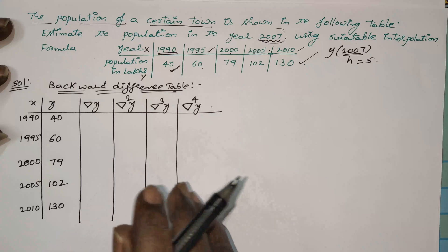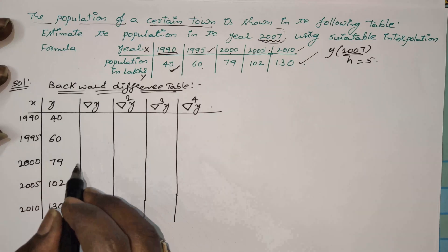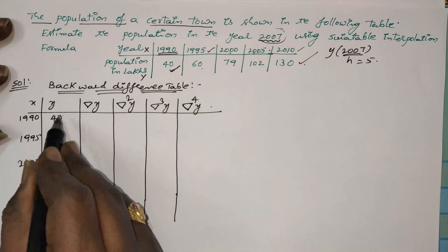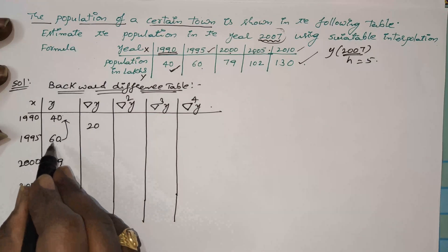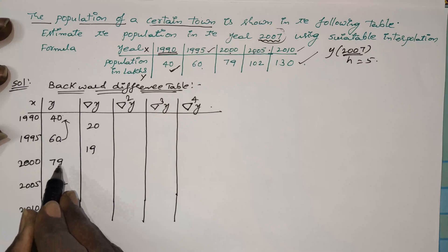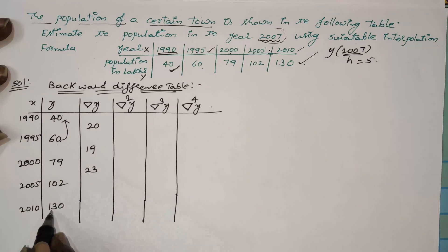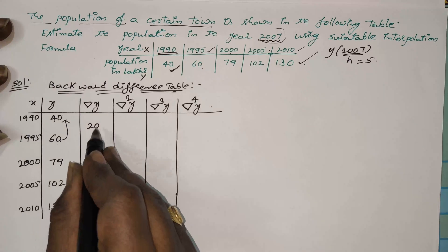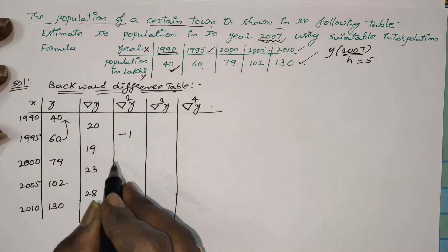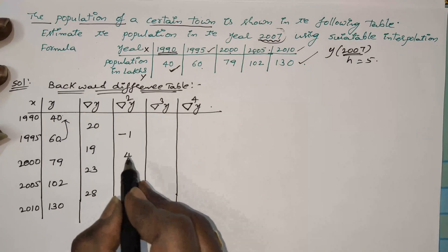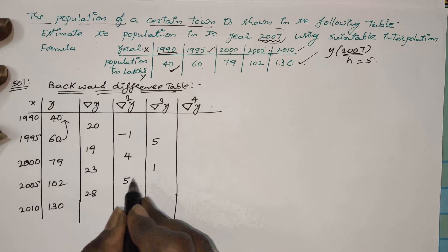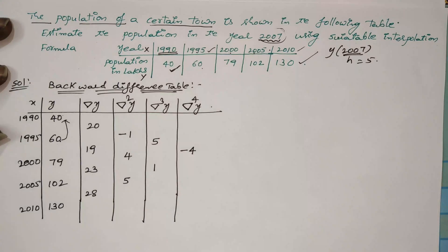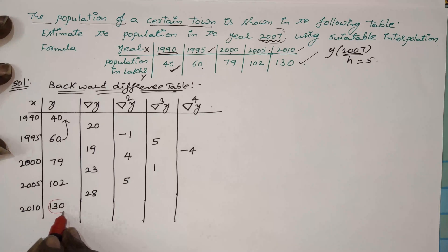To fill the differences, write the difference of the below value minus the above value: 60 minus 40 is 20; 79 minus 60 is 19; 102 minus 79 is 23; 130 minus 102 is 28. Then second order: 19 minus 20 is minus 1; 23 minus 19 is 4; 28 minus 23 is 5. Third order: 4 minus (minus 1) is 5; 5 minus 4 is 1. Fourth order: 1 minus 5 is minus 4. When applying Newton's backward formula, round off the last corner values — don't forget it.